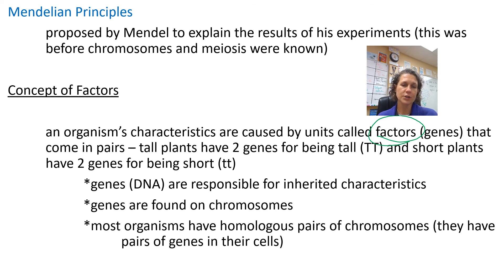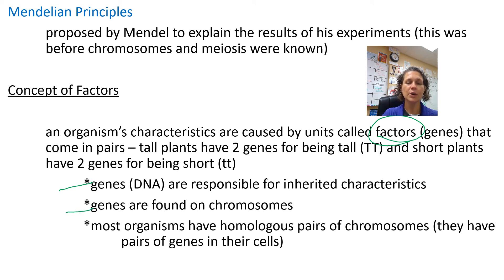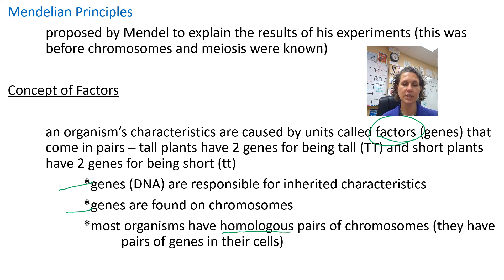For example, the P1 generation of tall plants has two genes for being tall. He used letters to designate: for tall, capital T, capital T. For the opposing trait, he used the same letter in lowercase — short plants, little t, little t. We know that genes are responsible for the traits we inherit, genes are found on chromosomes, and most organisms — plants, animals, people — have homologous pairs of chromosomes. One half of the pair is from the mother, one half from the father, but they contain the same information. That's what homologous means.